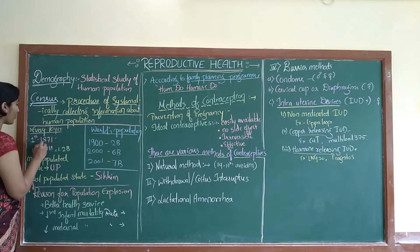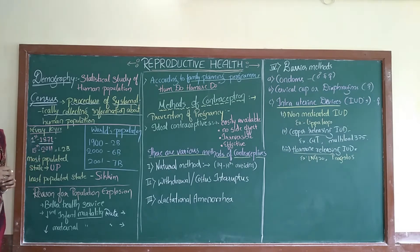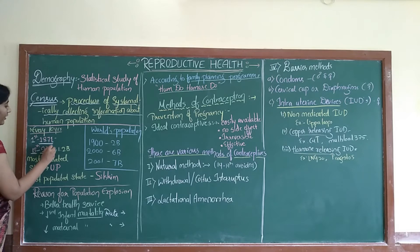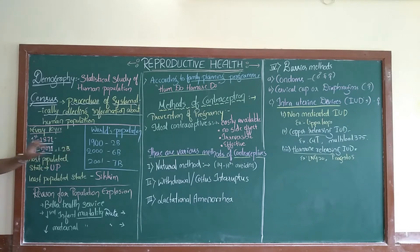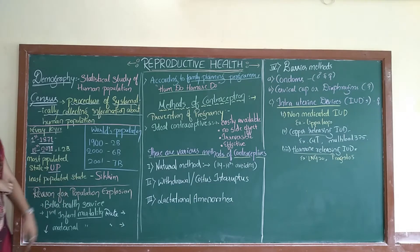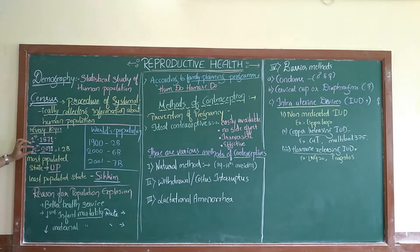Every 10 years this census is done. The first census was carried out in the year 1871, and the 15th census was recently recorded in 2011. In 2011 the population of India was 1.2 billion. The most populated state was Uttar Pradesh and the least populated state was Sikkim, according to the 2011 census data.